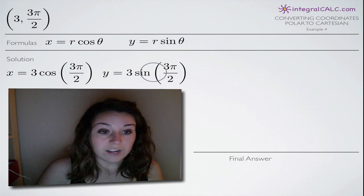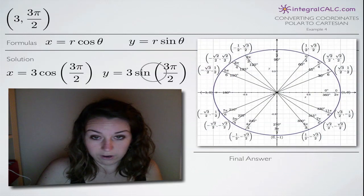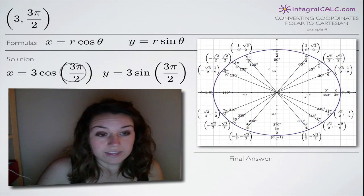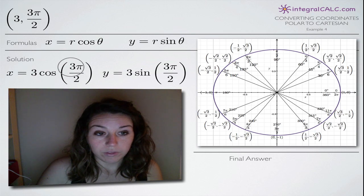So now we're going to evaluate these and then simplify. So in order to evaluate, we need our unit circle. And we're going to be evaluating both of these at the angle 3π/2.